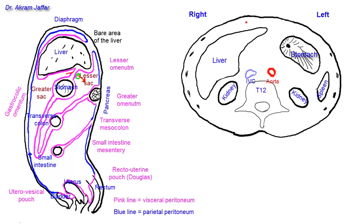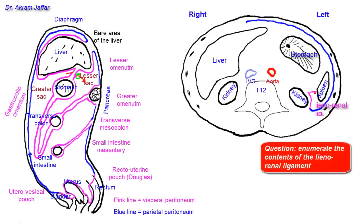Now I'll draw the parietal peritoneum in blue, starting at a point on the anterior abdominal wall in front of the liver. It goes back to the posterior abdominal wall until it reaches the kidney, at which point it covers the kidney and becomes visceral peritoneum, drawn in pink. It is then reflected from the kidney as a fold — one layer extending from the kidney to the spleen — this is called the lienorenal ligament.